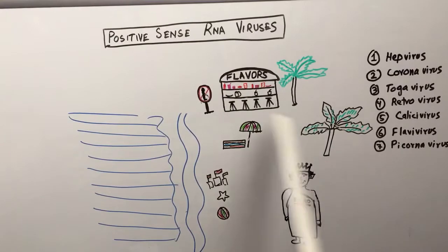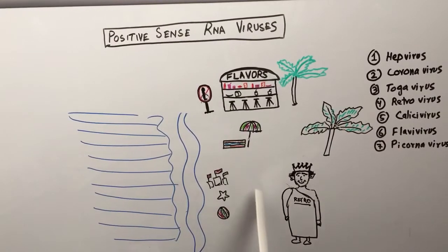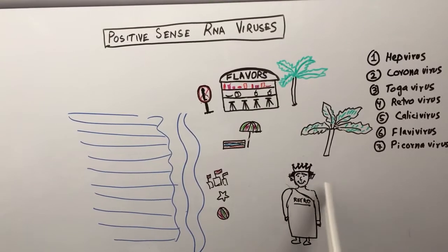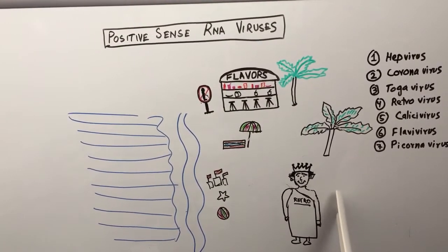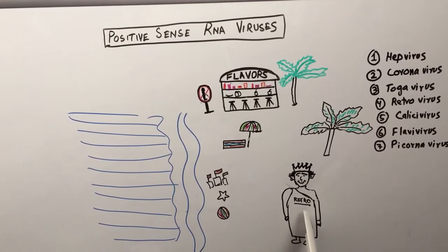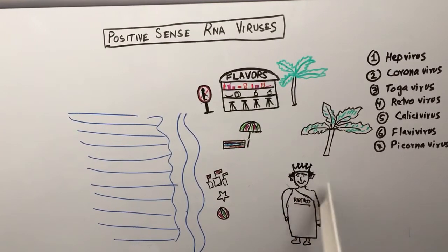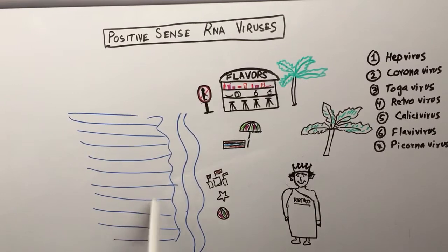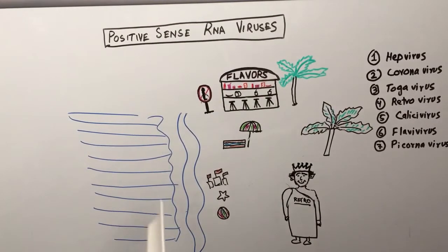The mnemonic is set around a seashore — a beach. Imagine there was a man who was very happy one day. He wore his favorite toga and his crown because he was happy and had a complete retro look. He then went to the California seashore.